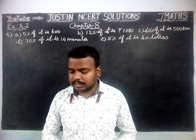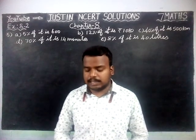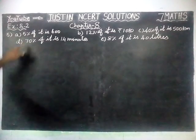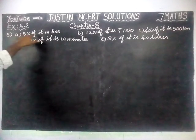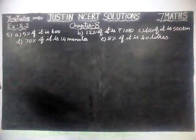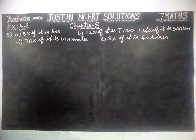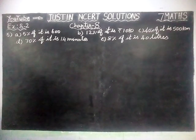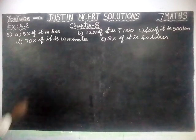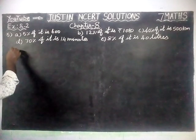The question is: find the whole quantity if 5% of it is 600. They didn't know what the whole quantity is. So first, we are going to take the whole quantity as X, or Y, or any variable like that.